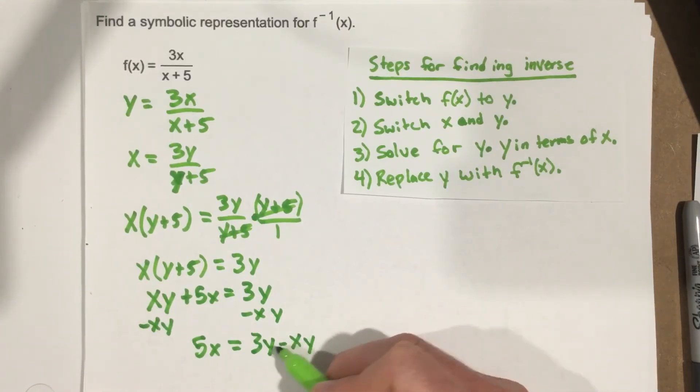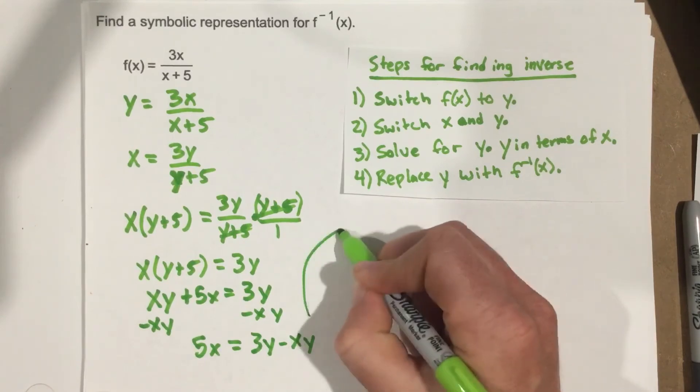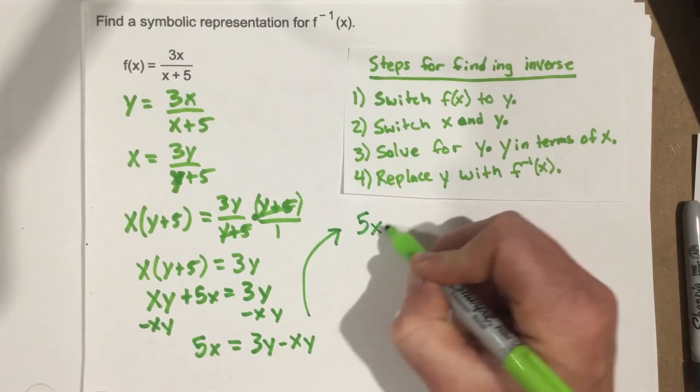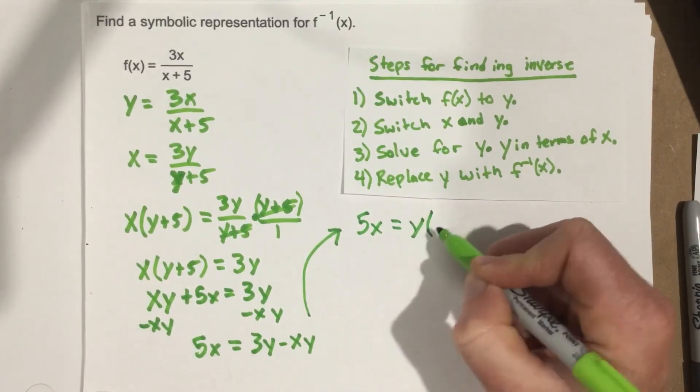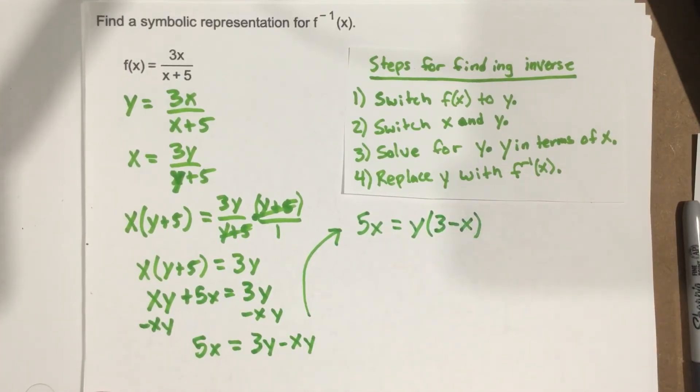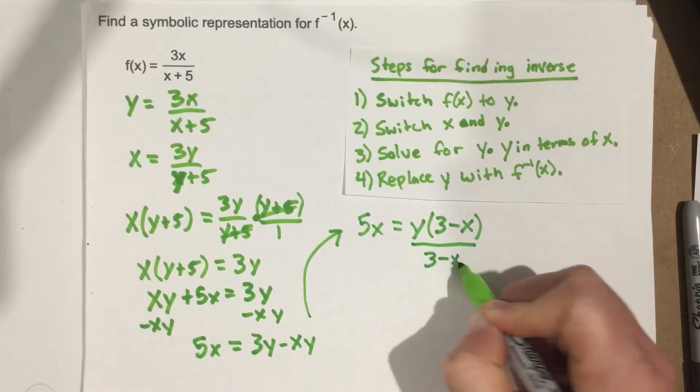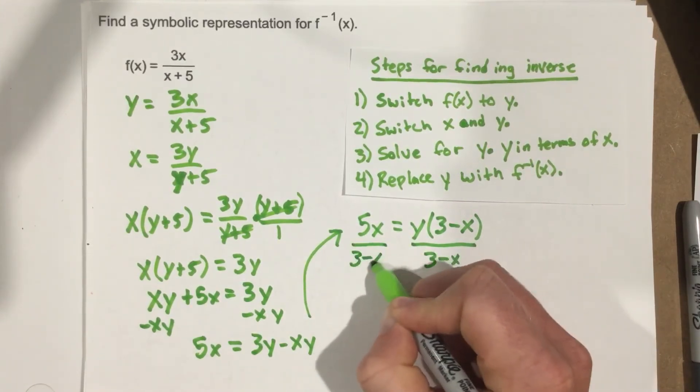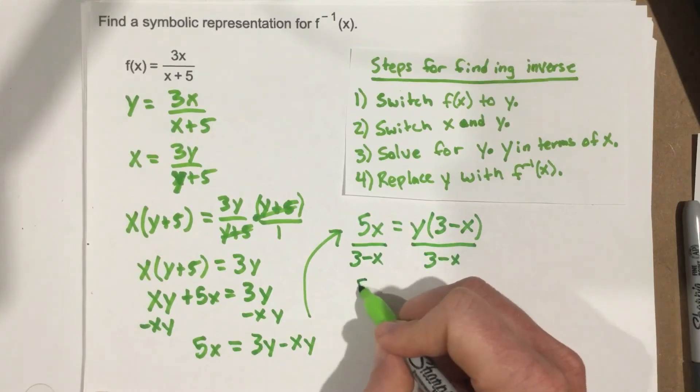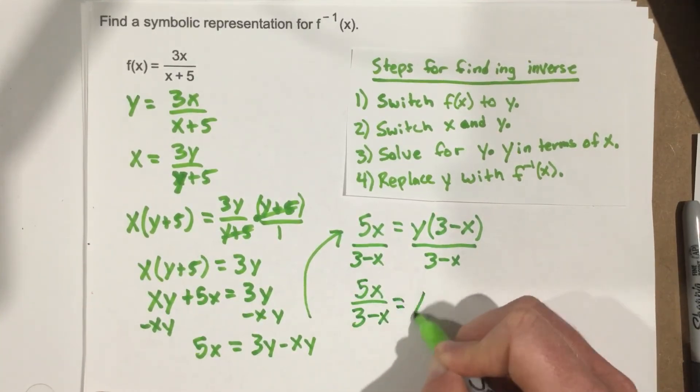Now I'm going to factor out a y from each term. So I end up with 5x equals y, and what's left is 3 minus x. And then I'm going to divide each side by 3 minus x. And I end up with 5x over 3 minus x equals y.